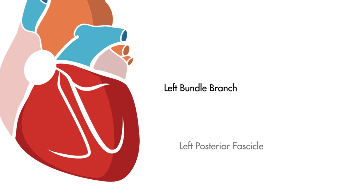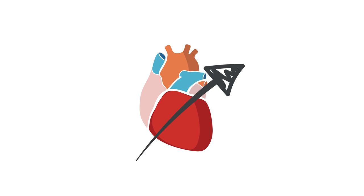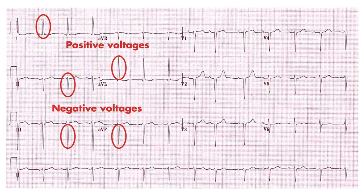Because of this lack of depolarization in the left anterior fascicle, the major vector of depolarization is upwards and leftwards, which produces large positive voltages in the left-sided leads seen as tall R waves laterally. You will also see large negative voltages inferiorly, depicted as deep S waves in your inferior leads on the EKG.